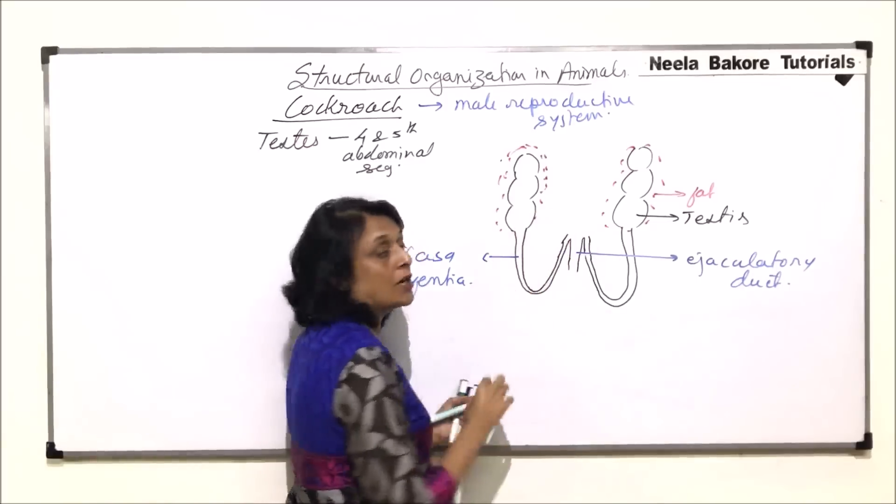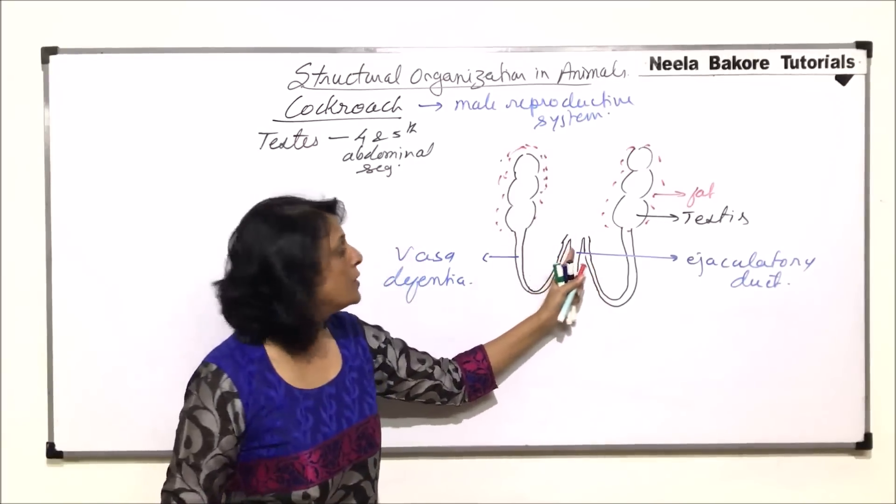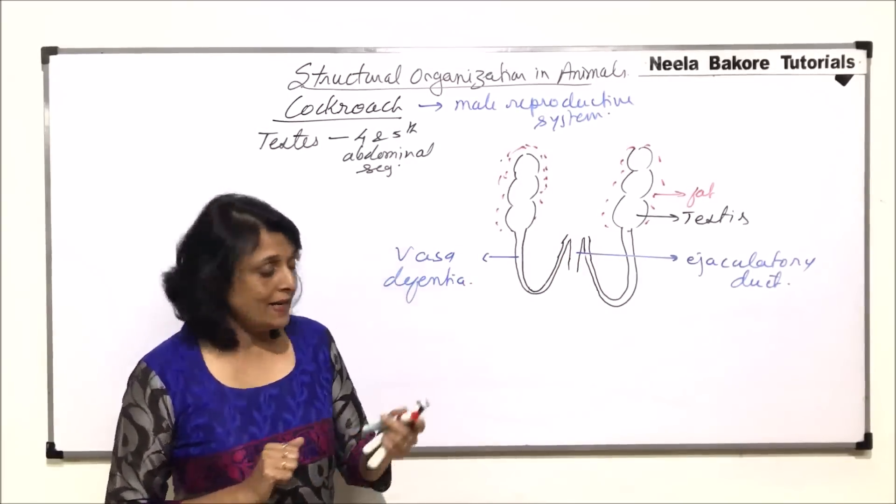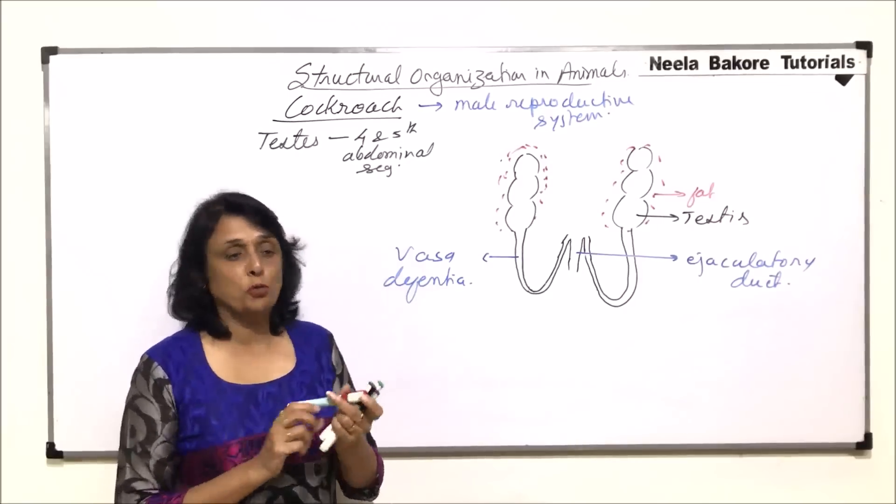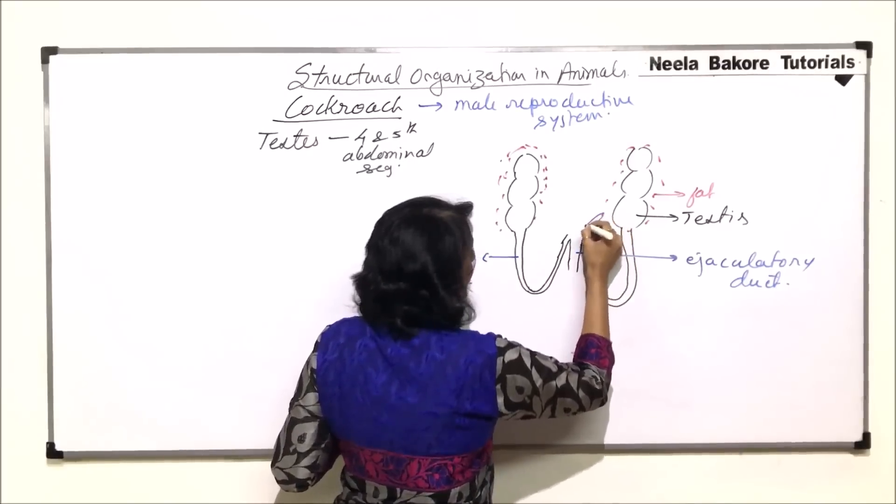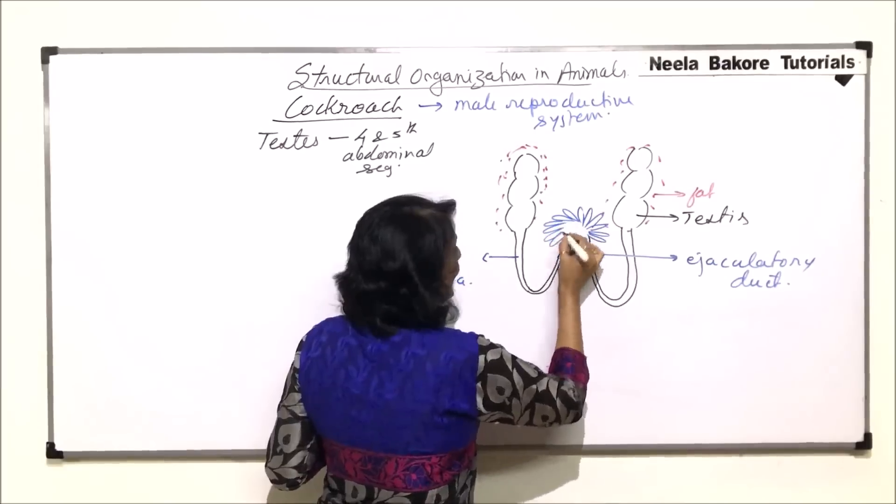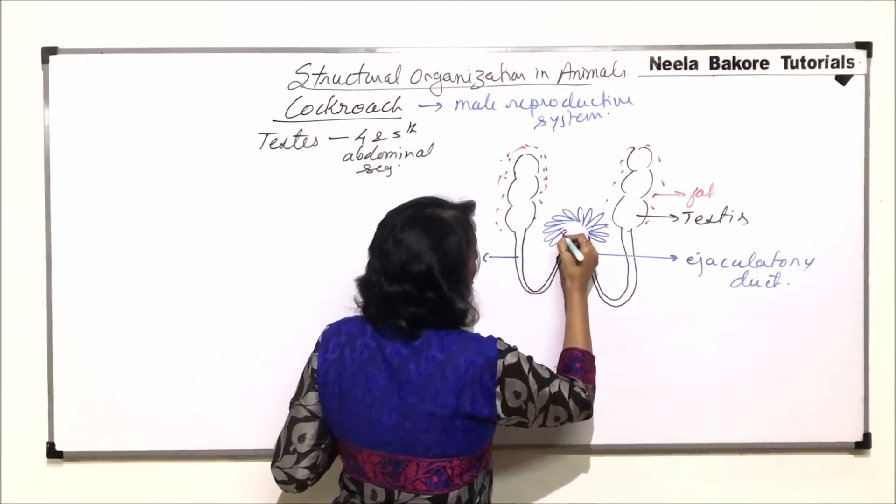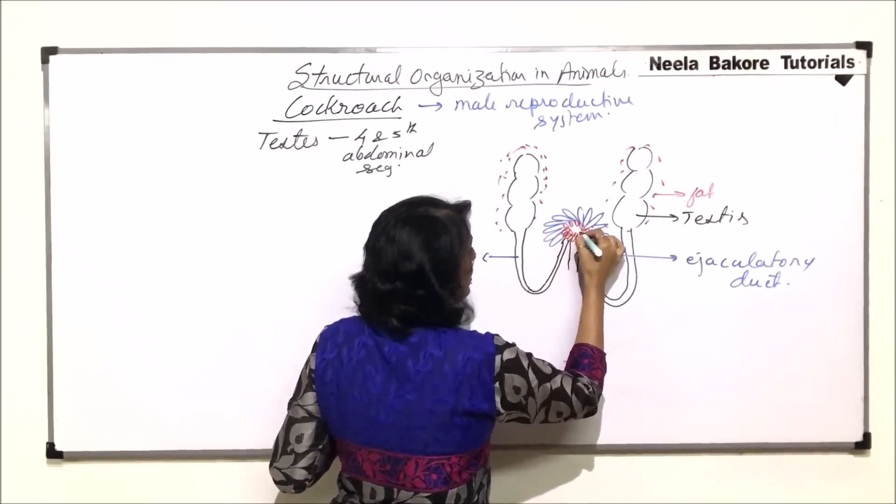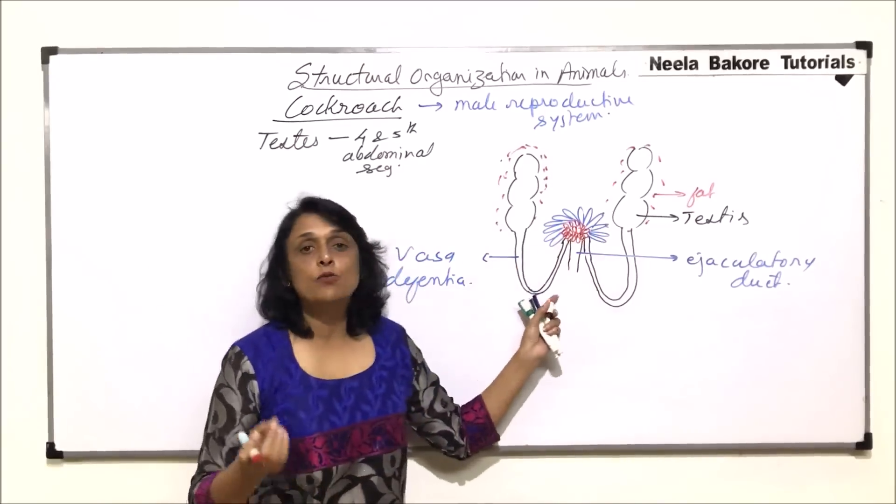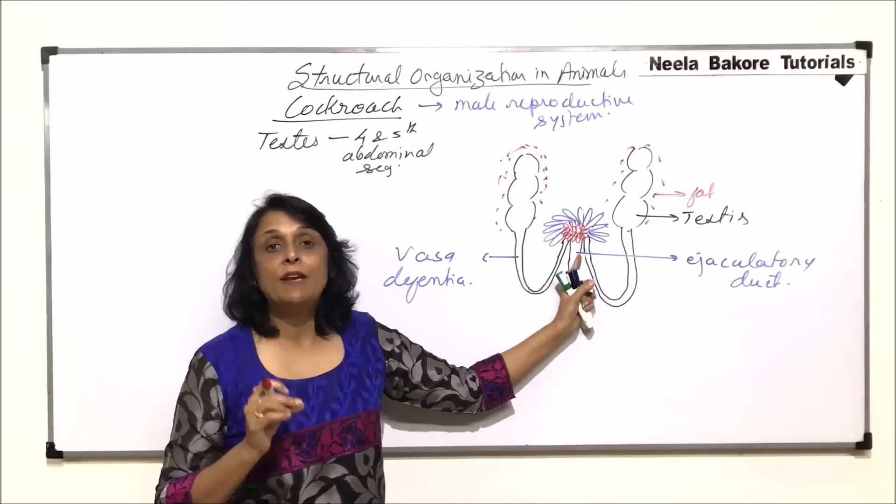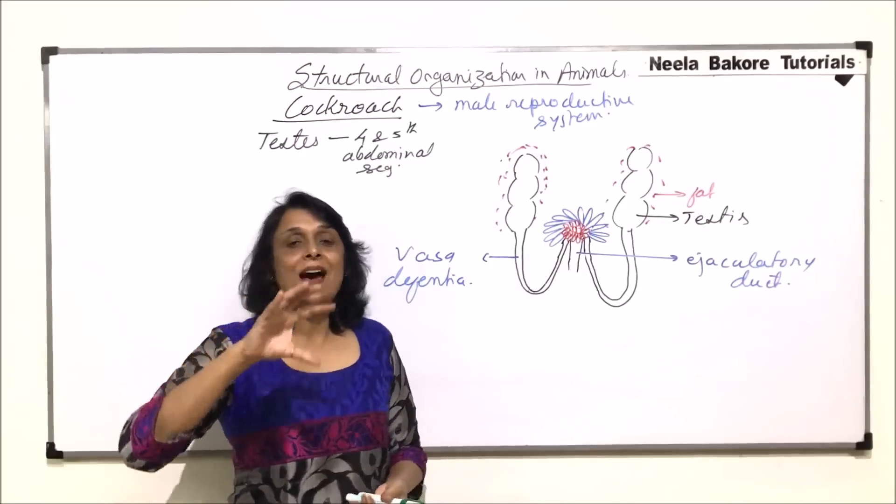So two vasa deferentia from both the testes, they come, they descend, go up to the lower abdominal segments and then ascend almost up to the fifth or the sixth segment and then join to form an ejaculatory duct. Just where this junction is, we find that there is a large gland and this gland is made up of three different types of tubules.